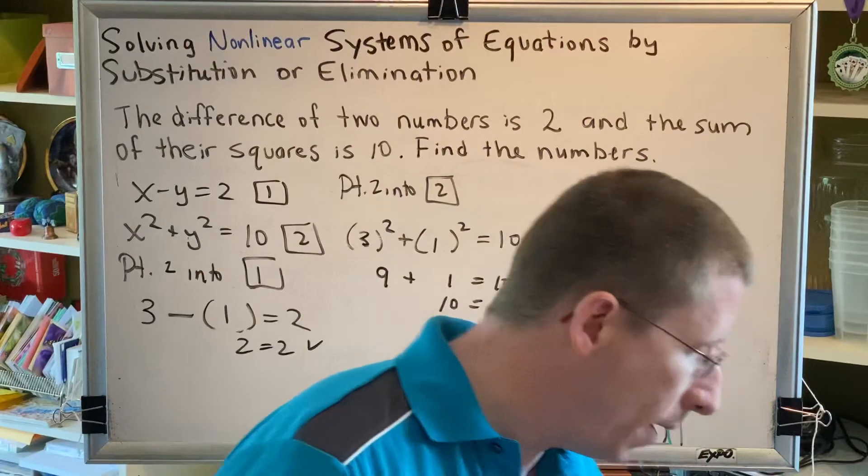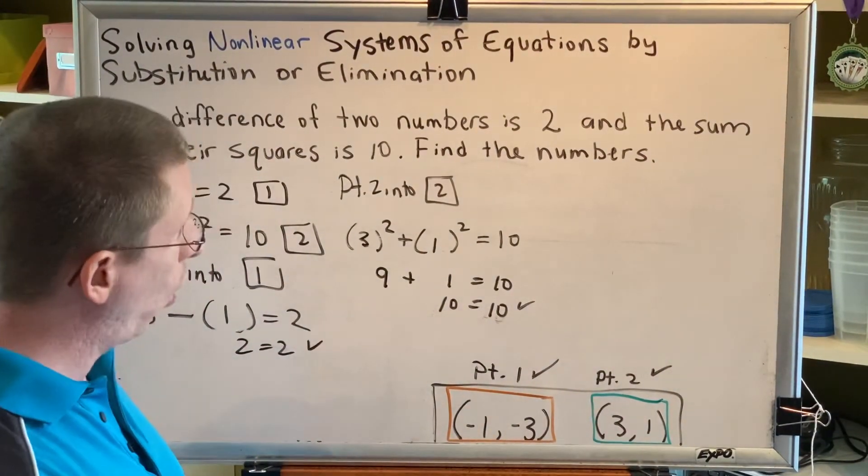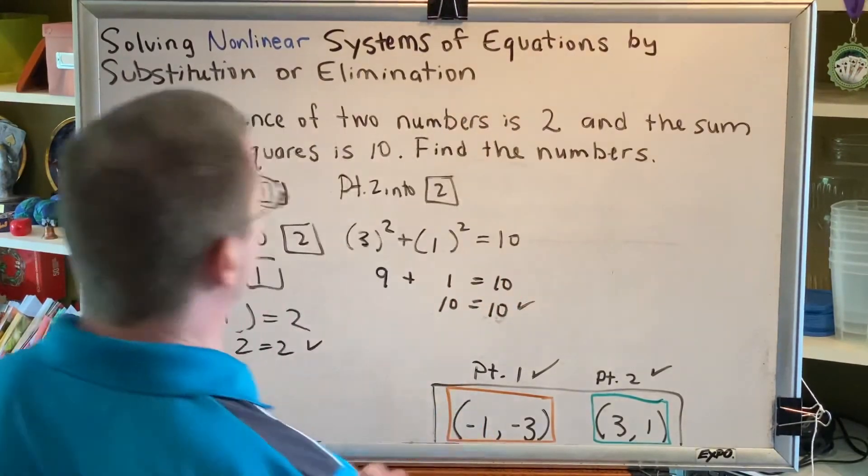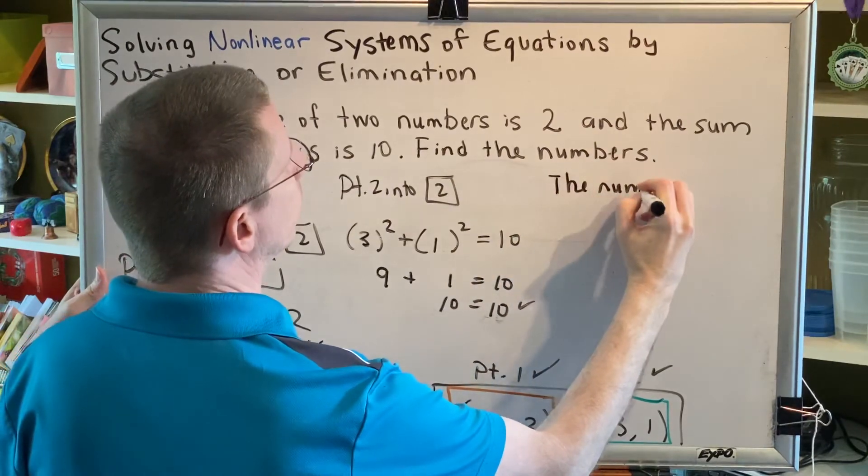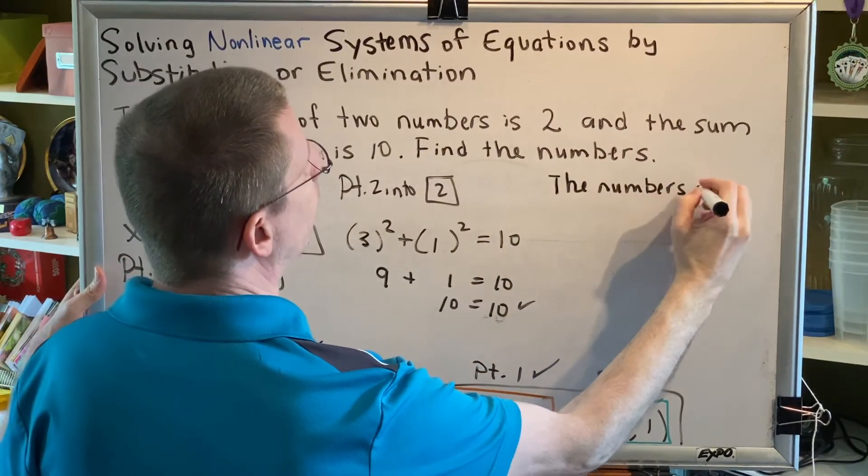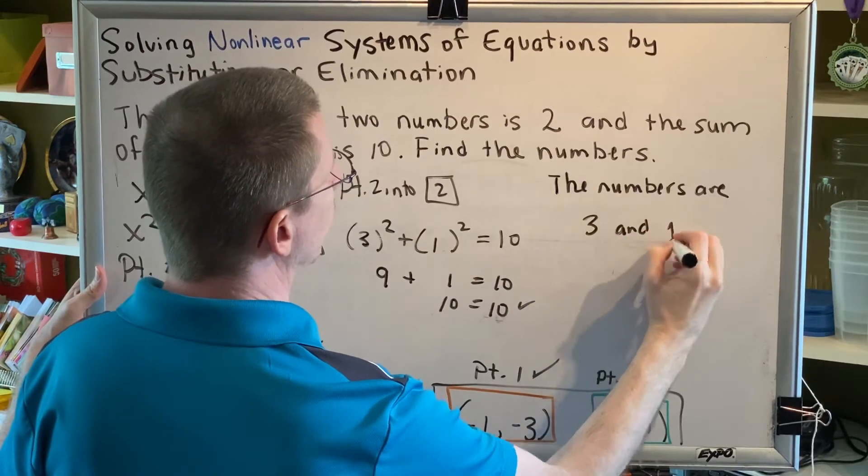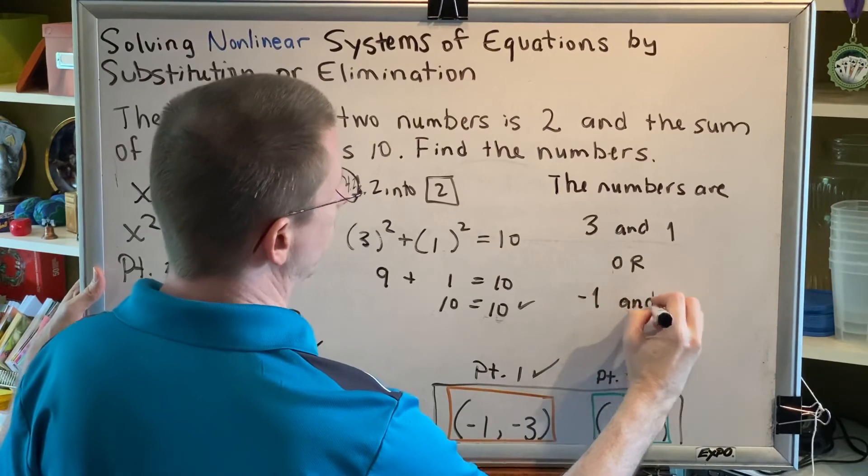So when it says find the numbers, you can write the numbers are 3 and 1, or you can write the numbers are negative 1 and negative 3. Let's write those two sentences. The numbers are 3 and 1, or negative 1 and negative 3.